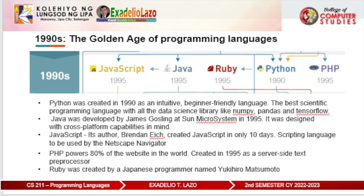PHP powers 80% of websites in the world. It was created in 1995 as a server-side text processor and is ubiquitous thanks to WordPress, the most popular content management system in the world. Ruby was created by Japanese programmer Yukihiro Matsumoto, who took many inspirations from Python and tried to create a genuine object-oriented language. Ruby was widely adopted because of the popularity of the framework Ruby on Rails, which pioneered the philosophy of convention over configuration.